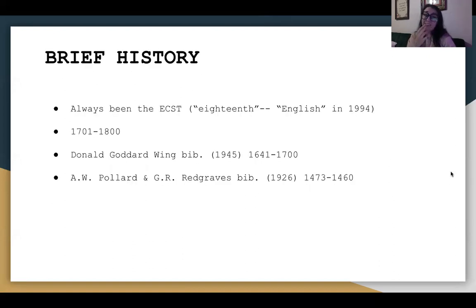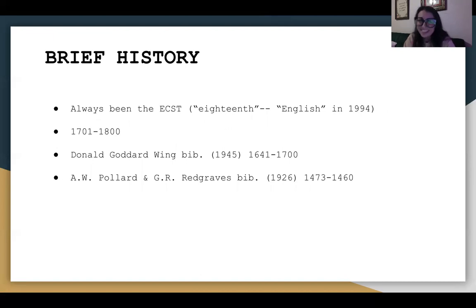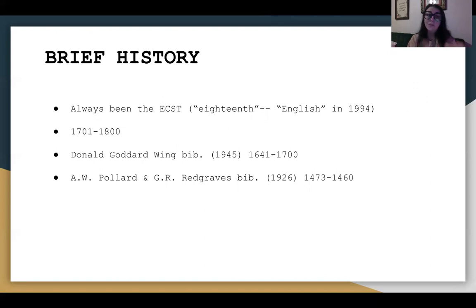A brief history. So it has always been the ESTC — English Short Title Catalog. It used to be the 18th Century Short Title Catalog because it was only from 1701 to 1800.